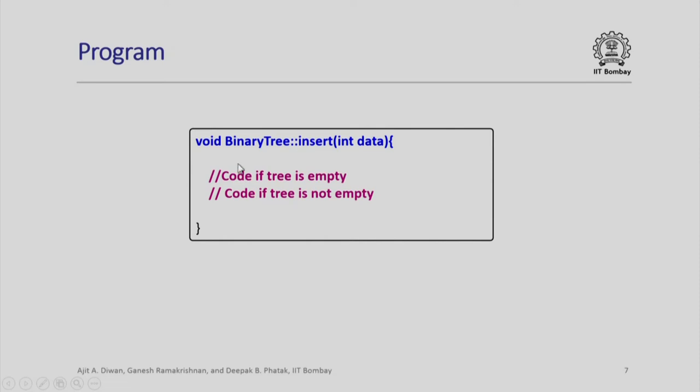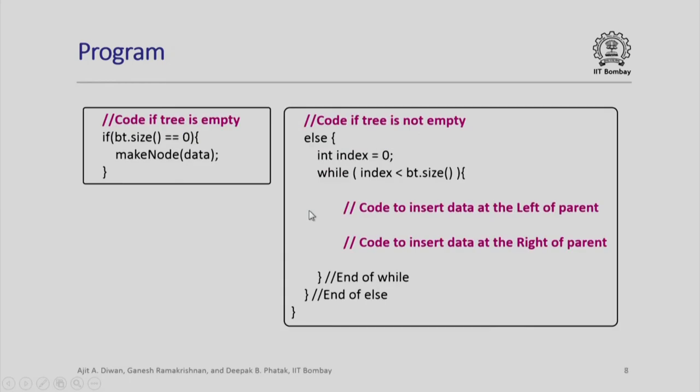Next, let us consider the binary tree insert function. Now there are two things. One, when the tree is empty, we will have to write some code. And two, when tree is not empty and we are inserting a node, then we will have to write the code which will require us to find out whether it has to be inserted to the left or right, or whether we have to traverse the tree to find a place for insertion. Let us look at the program in some details.